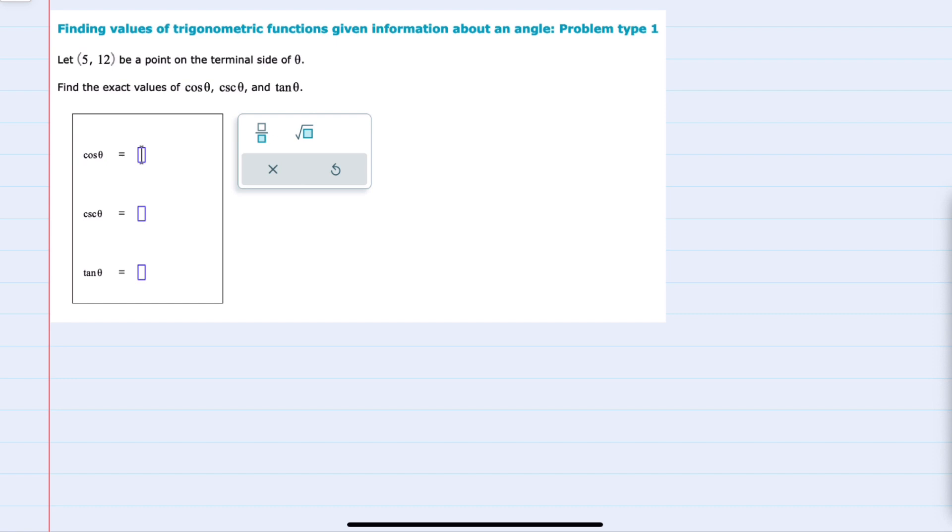In this example we're given the point (5,12) and told that it is on the terminal side of theta, and then we're asked to find the exact values of cosine, cosecant, and tangent.